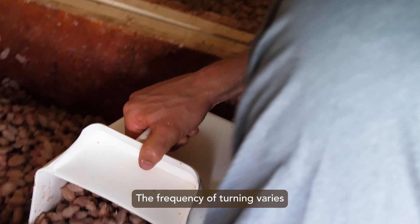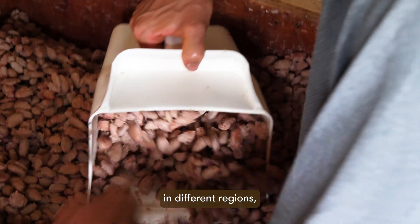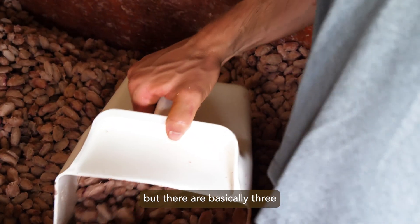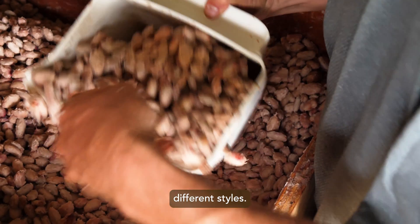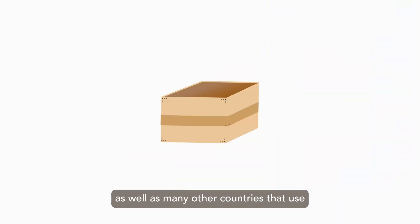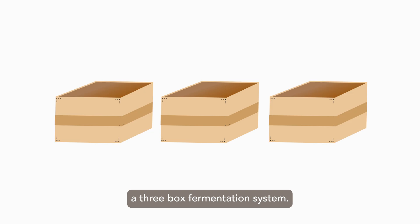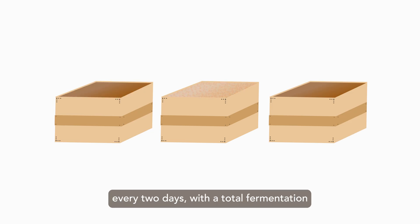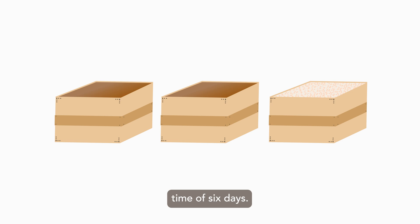The frequency of turning varies in different regions, but there are basically three different styles. In Trinidad, as well as many other countries that use a three-box fermentation system, the cacao is moved to a new box every two days with a total fermentation time of six days.